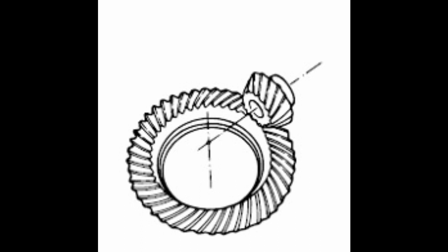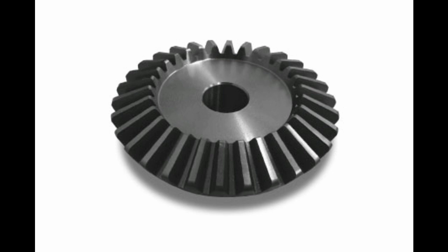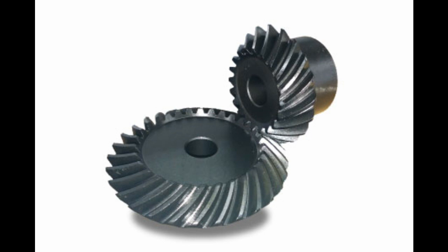Bevel gears have a cone-shaped appearance and are used to transmit force between two shafts which intersect at one point (intersecting shafts). A bevel gear has a cone as its pitch surface and its teeth are cut along the cone. Kinds of bevel gears include straight bevel gears, helical bevel gears, spiral bevel gears, biter gears, angular bevel gears, crown gears, zero bevel gears, and hypoid gears.